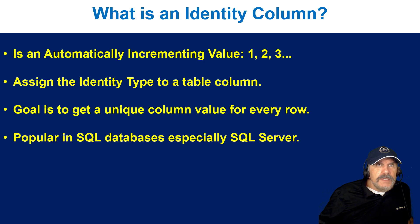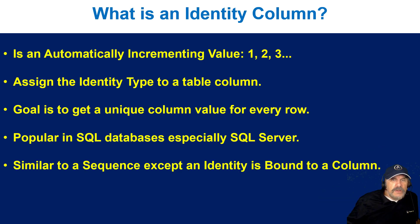Some databases like Oracle used to use something called a sequence, which is very similar, but identity columns are ubiquitous in SQL Server because they didn't have a sequence object — you could only use identity columns when you wanted to get this kind of feature. A sequence is a separate object that will increment, and every time you grab a value it just increments it, but it's not directly connected to the column itself.